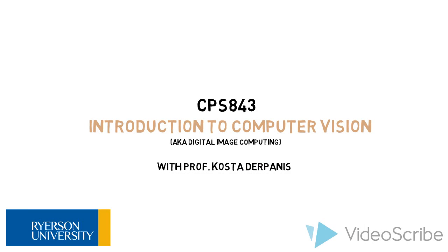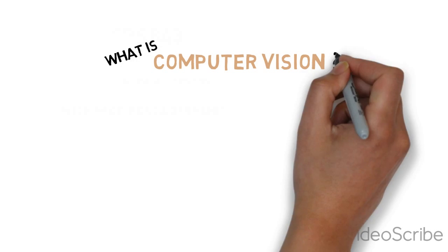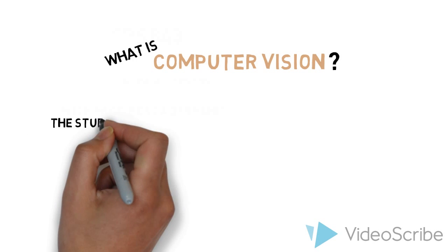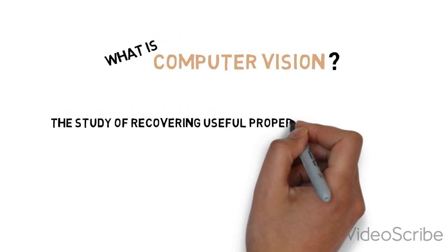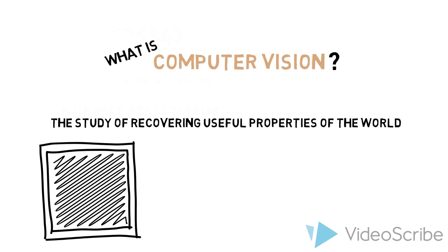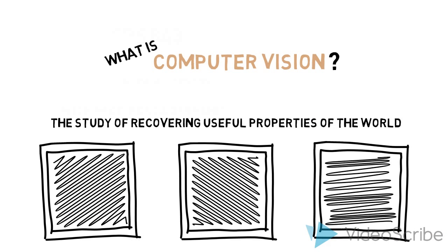The focus of this course is on foundational aspects of computer vision. You may be thinking, what is computer vision anyways? One possible definition is: computer vision is the study of recovering useful properties of the world from a single image or multiple images.